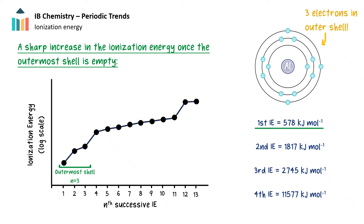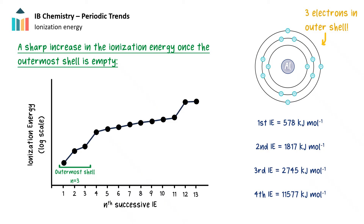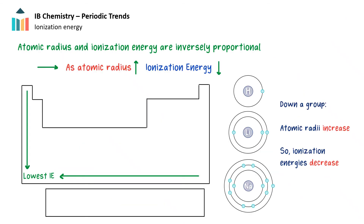For example, in aluminum, the first, second, and third ionization energies see a modest increase as these electrons are all removed from the 3s or 3p orbitals. But the fourth ionization energy is much higher at about 11,000 kJ/mol, as this represents a 2p electron being removed from Al³⁺. So that's how successive ionization energies change for the same atom — but how do ionization energies for different elements change when moving across the periodic table?